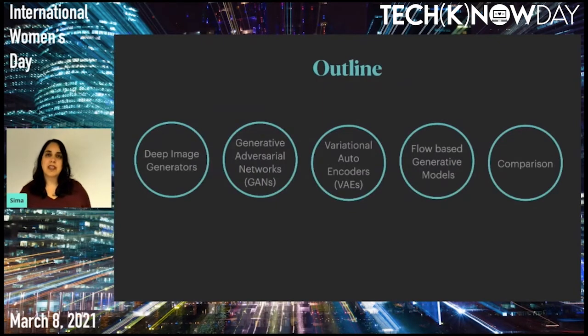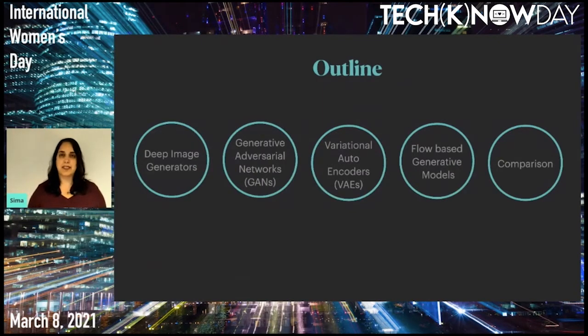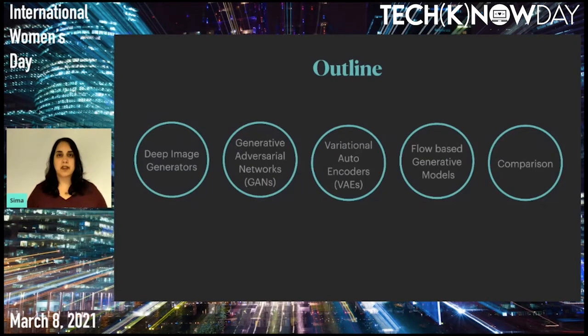We will start the talk by presenting the problem deep image generators are facing. Then we will go over the main idea of generative adversarial networks, variational autoencoders, and flow-based generative models, and we'll finish with a comparison between the methods.